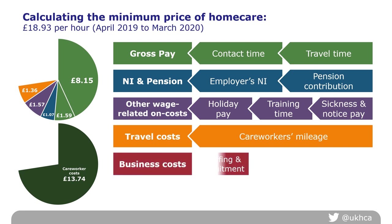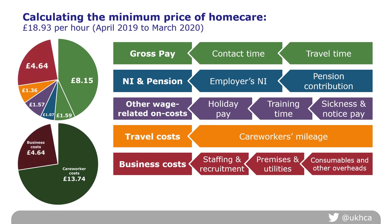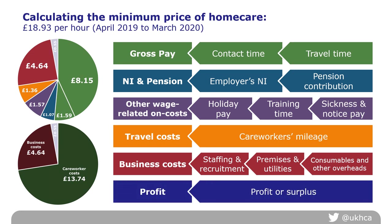The business itself also has operating costs: staffing the office, recruiting and training new care workers, paying for premises and utilities, consumables and other overheads — adding another £4.64 for running the business. Organisations must also make a profit or surplus, which adds another £0.55 per hour of care. Adding all of those together, we reach a minimum price based on the statutory national minimum wage or national living wage of £18.93 per hour.